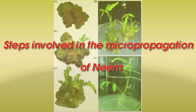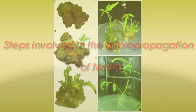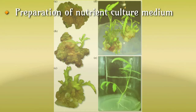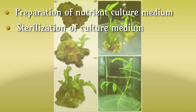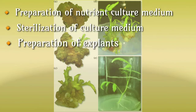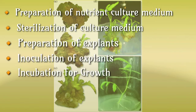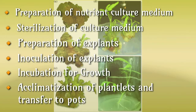The steps involved in the micropropagation of neem are: preparation of nutrient culture medium, sterilization of culture medium, preparation of explant, inoculation of explant, incubation for growth, acclimatization of plantlets, and transfer to pots.